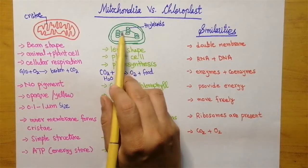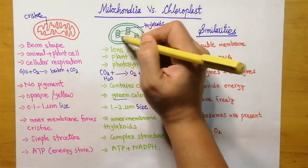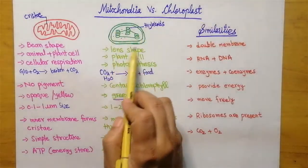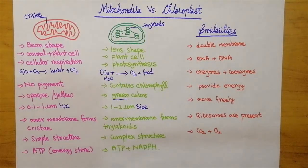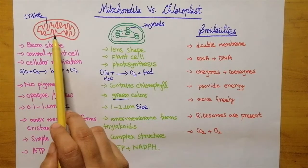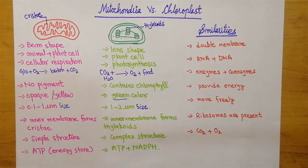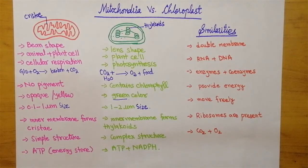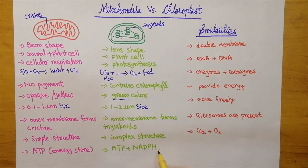The mitochondria is a simple structure, while in the case of chloroplast it is a complex structure. Here you can see the thylakoids attached to each other, and then ribosomes, outer membrane, and inner membrane — all making a complex structure. In mitochondria, energy is formed and stored in the form of ATP, which is adenosine triphosphate, while in the case of chloroplast, energy is stored in the form of ATP plus NADPH.